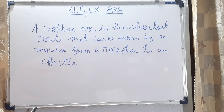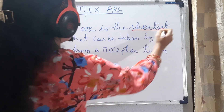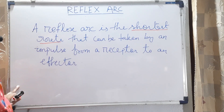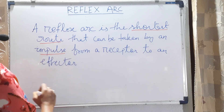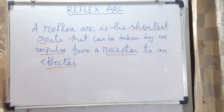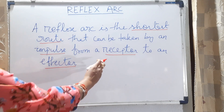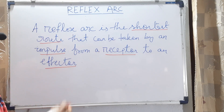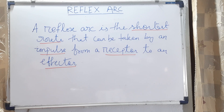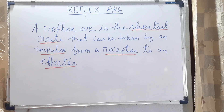In a reflex arc, the operative terms are: the shortest route, then impulse, then receptor and effector. Impulse is nothing but the nerve impulse. Receptors are the specialized cells specifically present in the sense organs, whereas effectors may be the muscles or the glands.